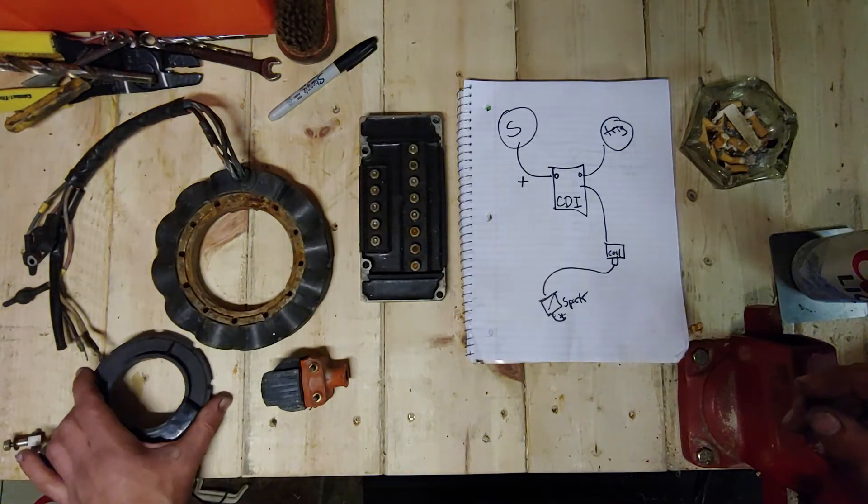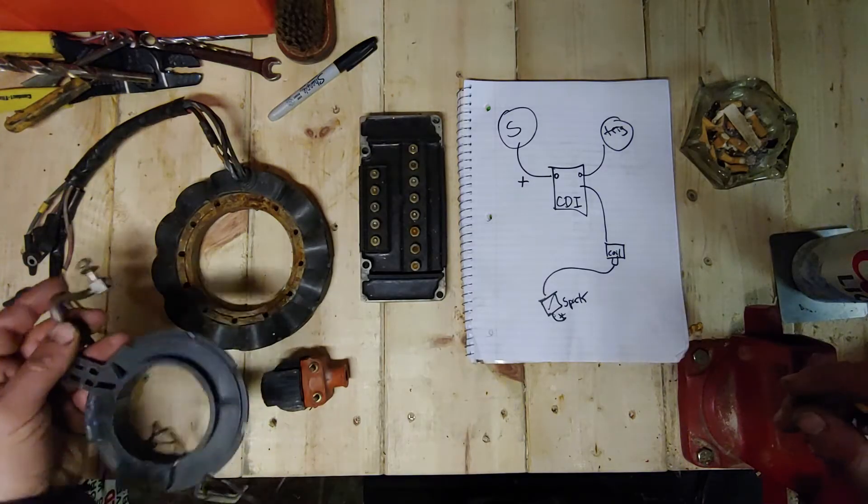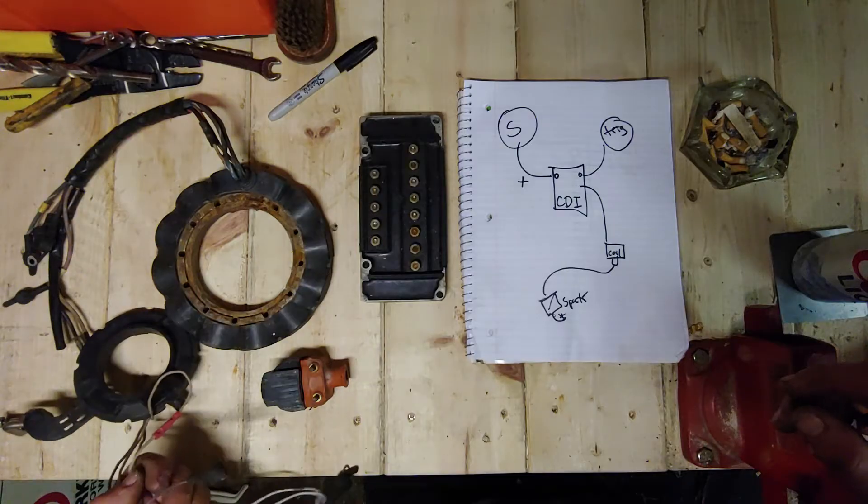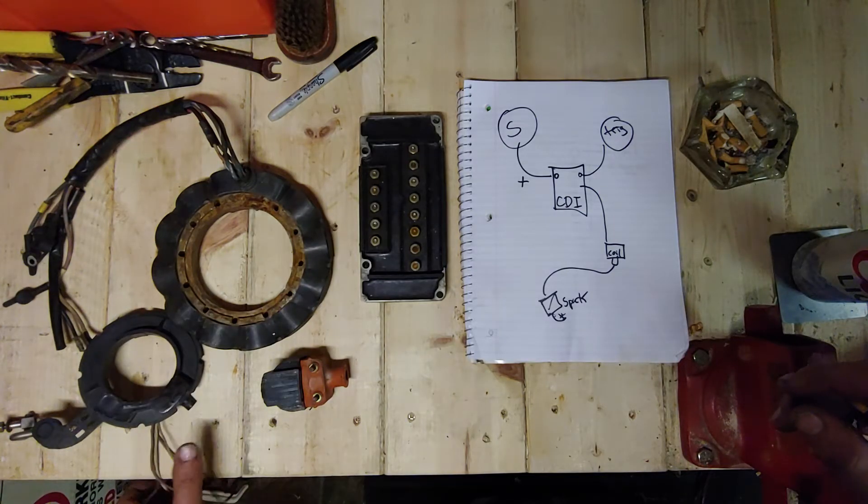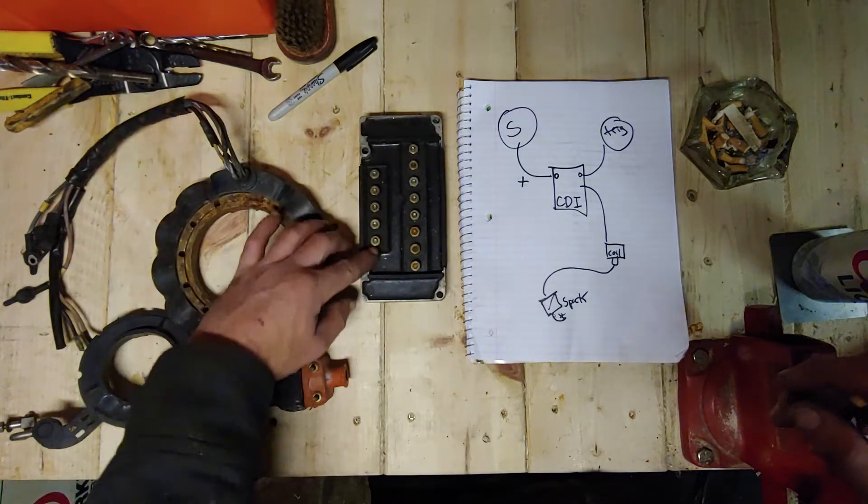This is a trigger. It attaches mechanically to your throttle linkage for advancing and retarding, and it has wires coming out of it that connect to the CDI box. So this connects to the CDI box on this side.